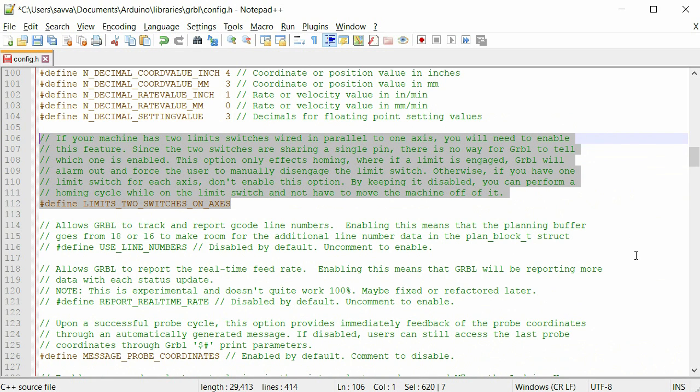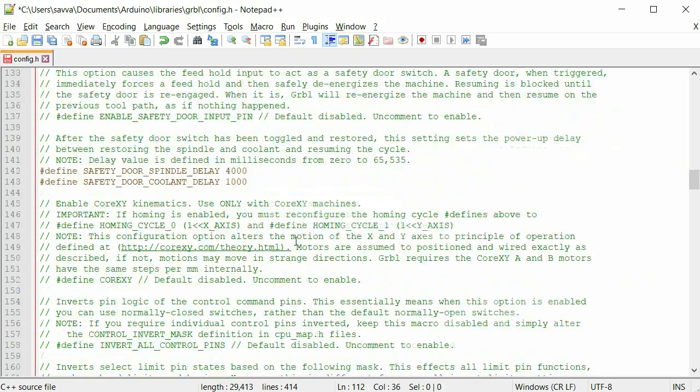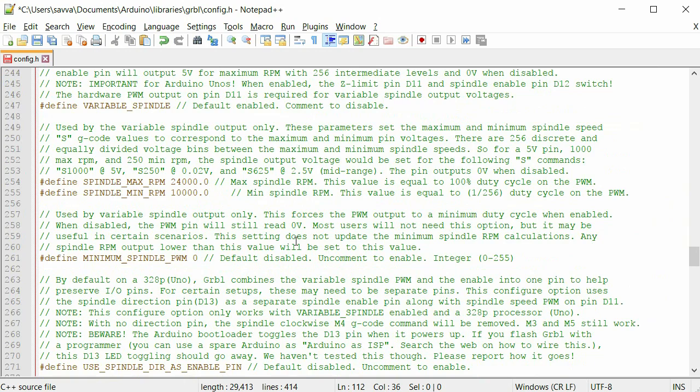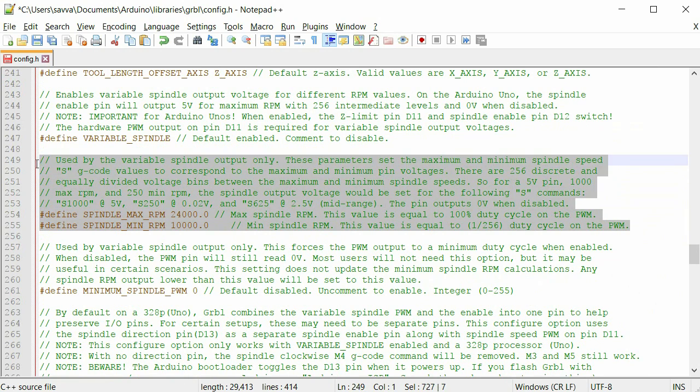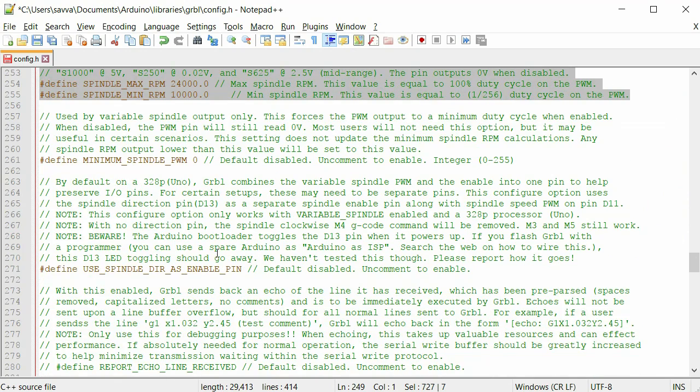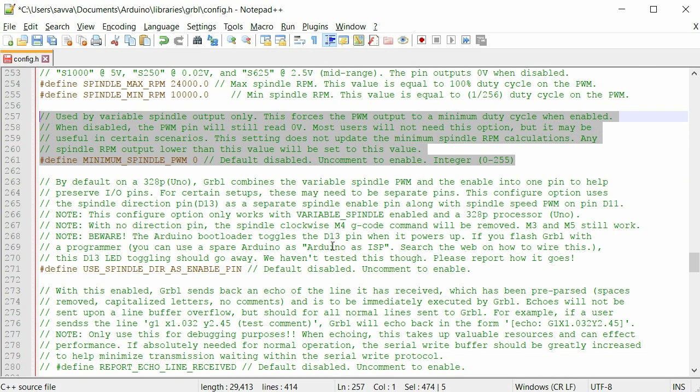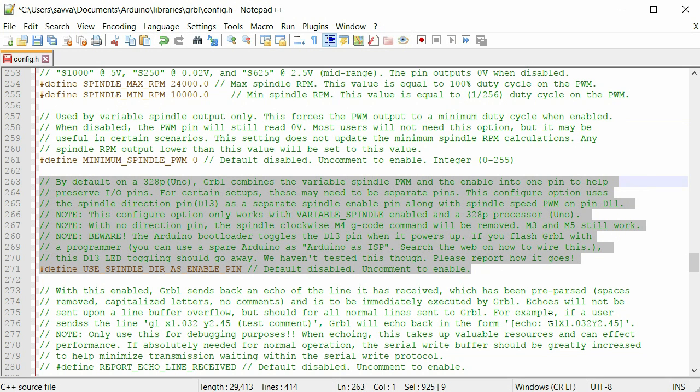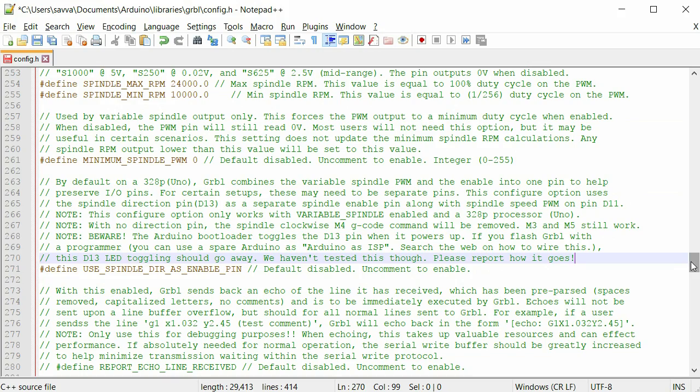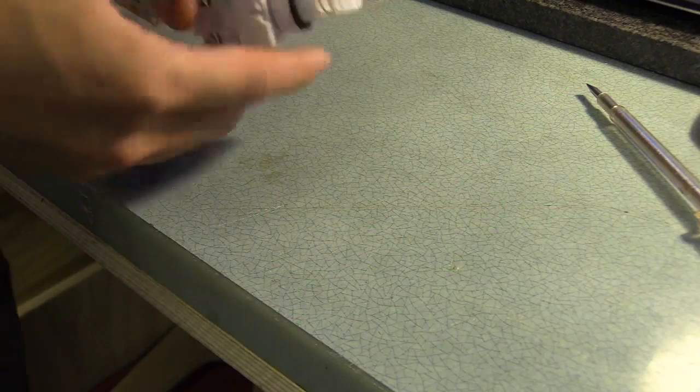So these are the features I've changed in GRBL version 0.9. Line 112 I uncommented the limit two switches on axis. Line 254 I changed the spindle max RPM to 24,000. Line 255 I changed the spindle minimum RPM to 10,000. Line 261 I uncommented minimum spindle PWM which I also set to 0. And finally line 271 which I again uncommented which was use spindle direction enable pin. Doing this meant the speed toggle bar in BCNC began to work but for some reason I still can't get the margin scan to work, so if anyone has any clues I would appreciate them.